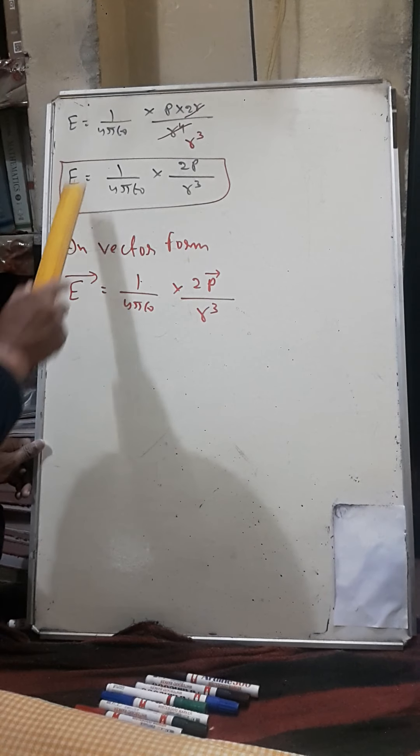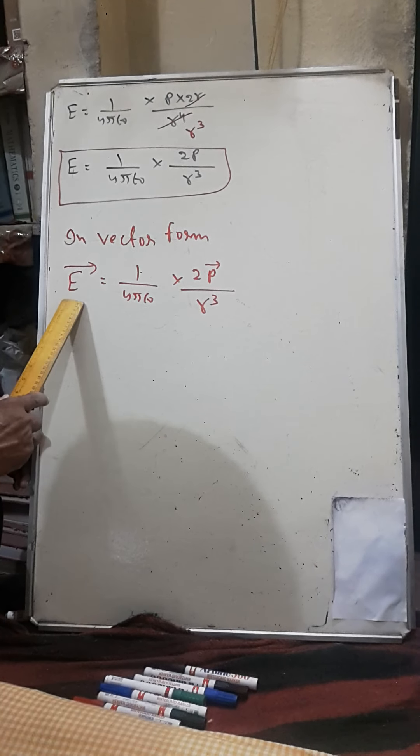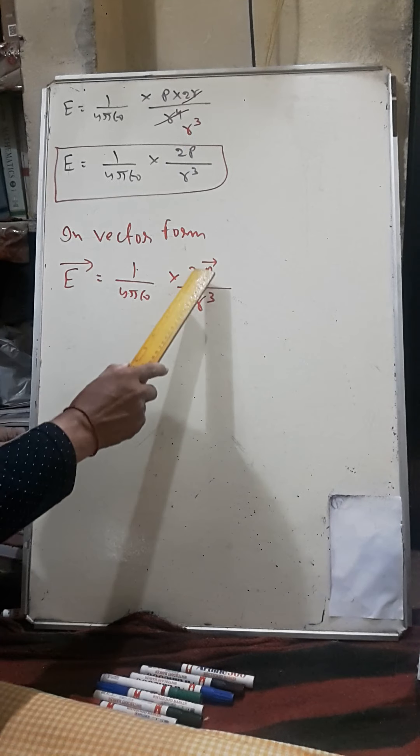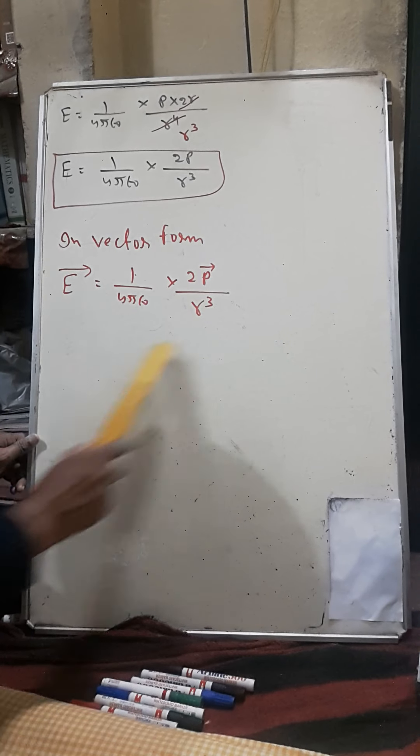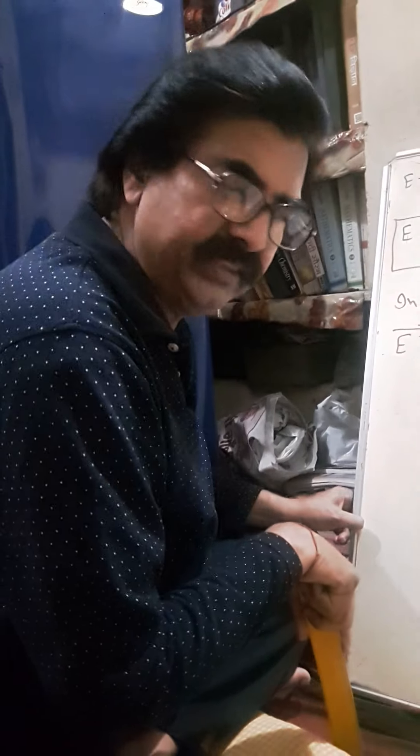And in vector form, the electric field intensity is a vector quantity, dipole moment is a vector quantity, direction will be shown. This is your vector form. Thank you.